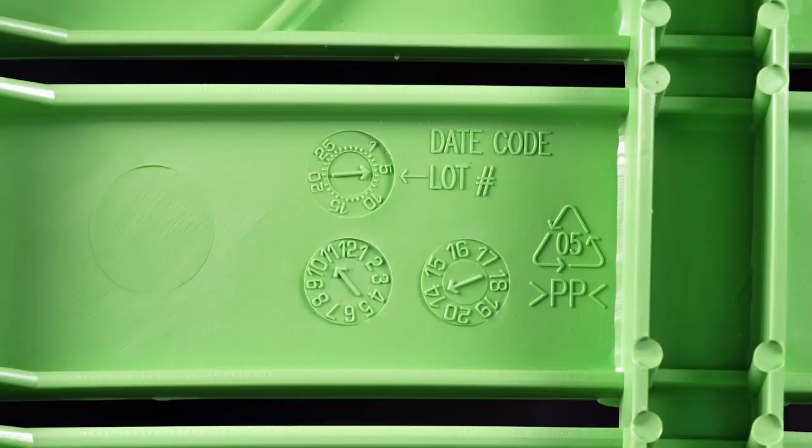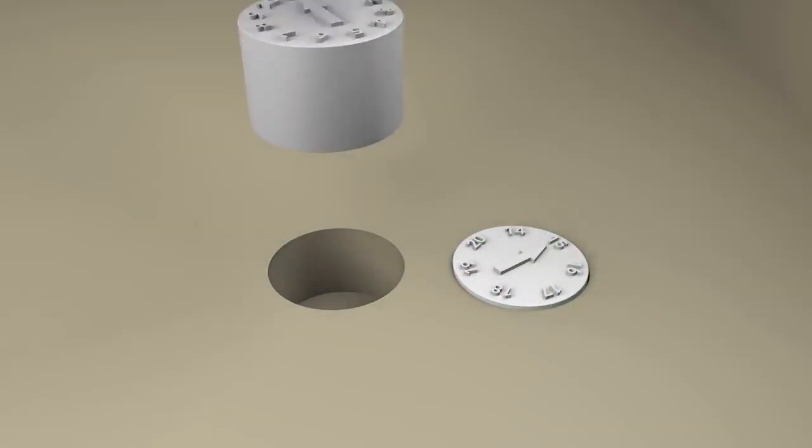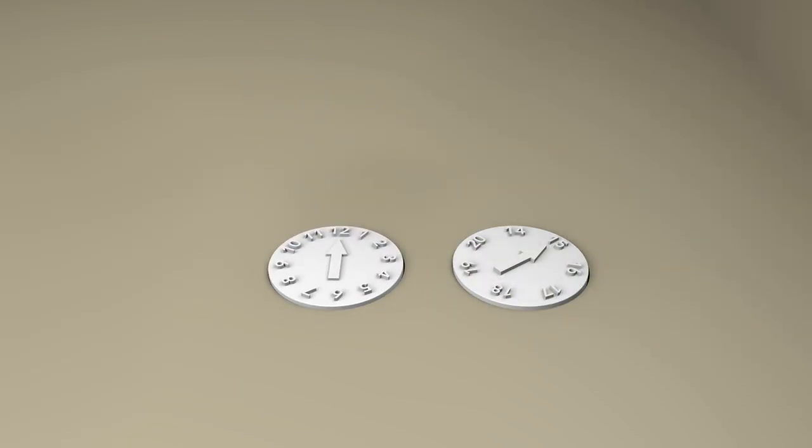Look around you and see how many injection molded objects you can find. Likely the device you're watching this on has injection molded parts. You should be able to find ejector pin witness marks and parting lines, but you may find something like this. It's a date wheel that shows the month and year the item was made. These are created by removable inserts and can be changed out for each run of the mold. They're very useful for tracking down defects.